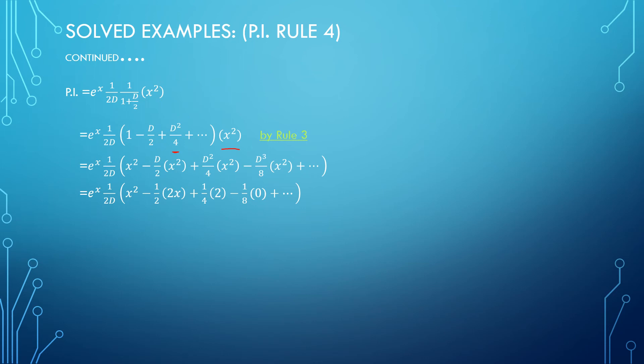1 upon 2d will be kept as it is because we know 1 upon d is an integration. After simplifying the series over x², I get the quadratic polynomial x² plus x plus 1/2. 1 upon 2d can be written as 1/2 times integral of the obtained polynomial. Taking the integration, I can simplify my expression and write the general solution.